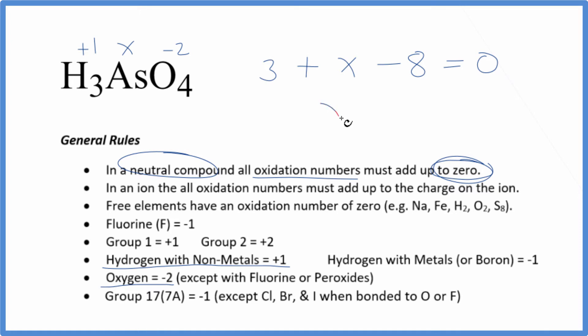Then we have X minus five equals zero. So X, that'll equal a positive five. So the oxidation number for the arsenic in H3AsO4, that's going to be plus five.